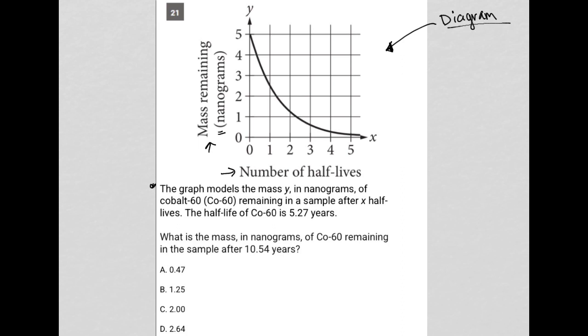The question says, the graph models the mass y in nanograms, which we just saw, of cobalt-60 remaining in a sample after x half-lives. So, that's our x-axis. The half-life of cobalt-60 is 5.27 years.